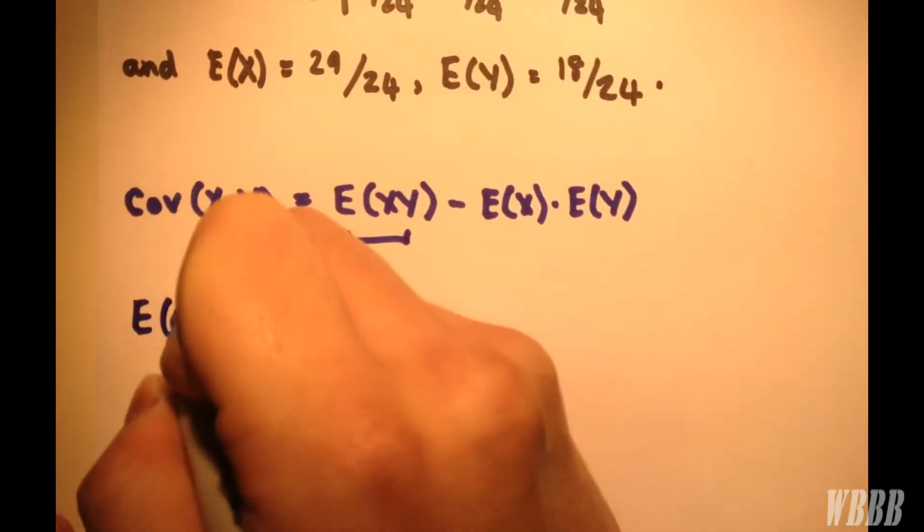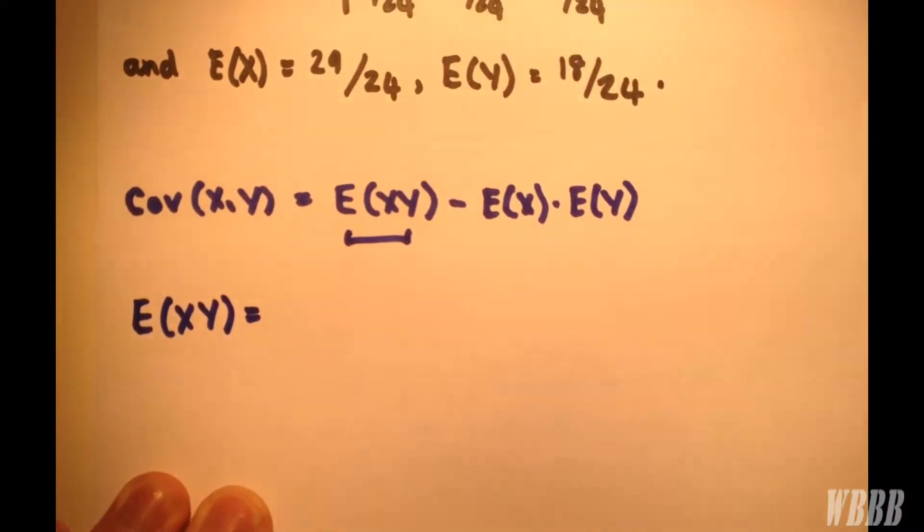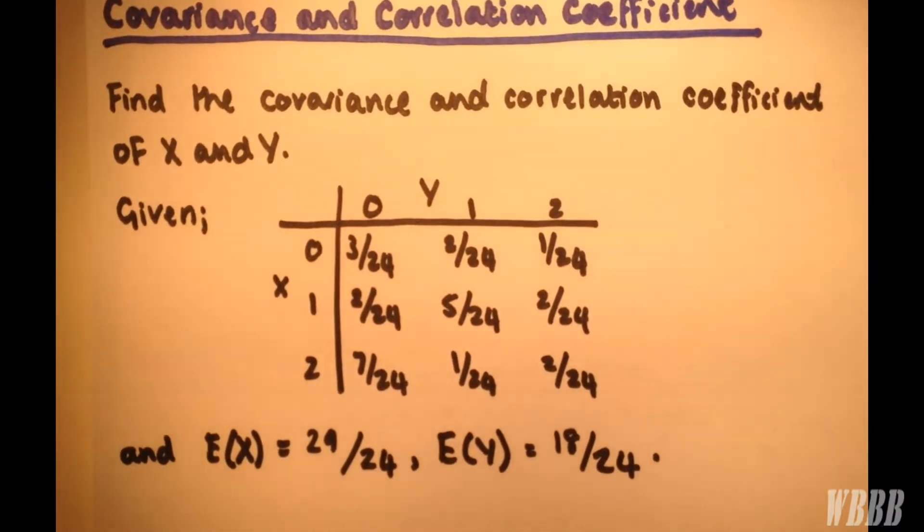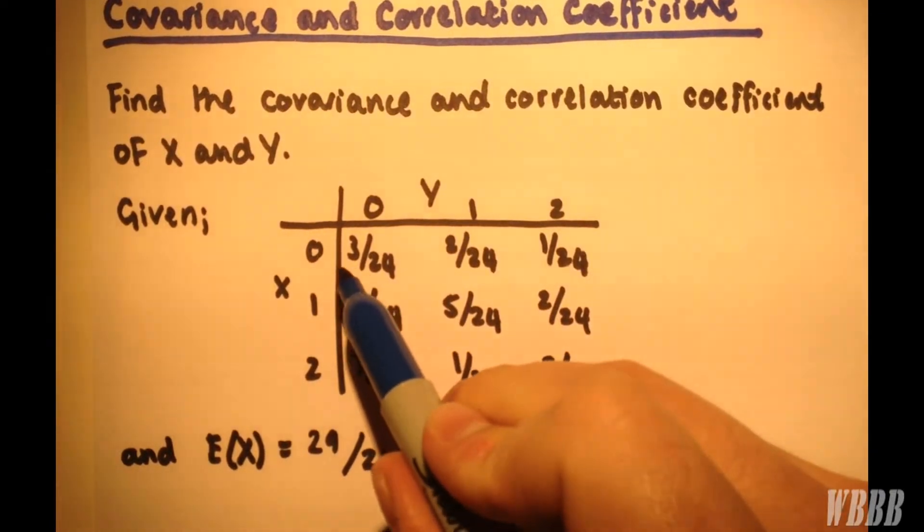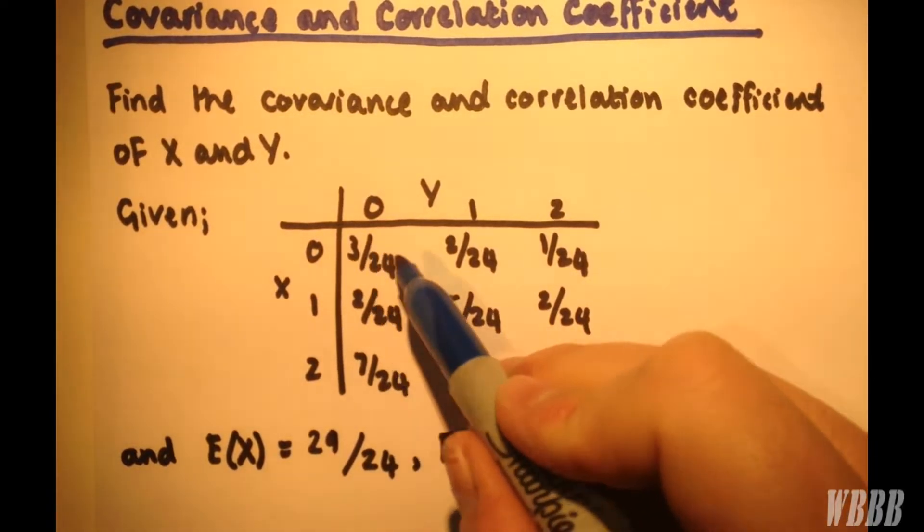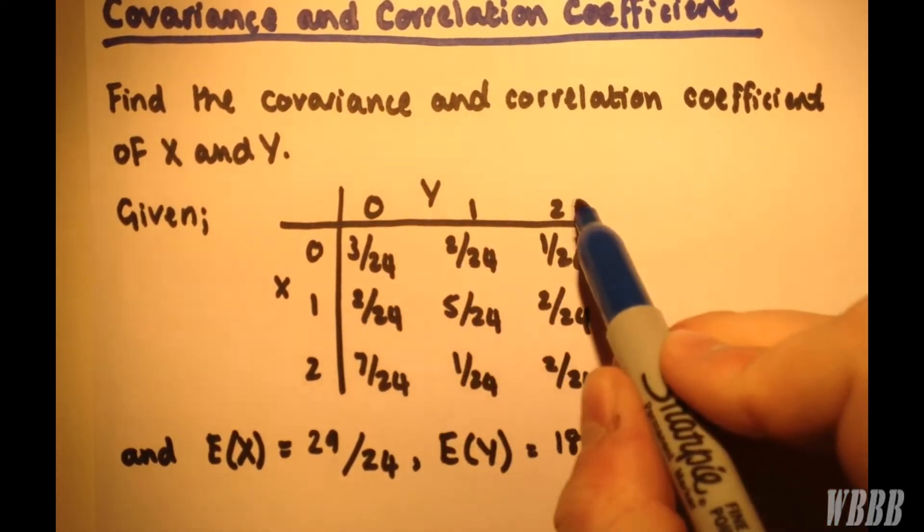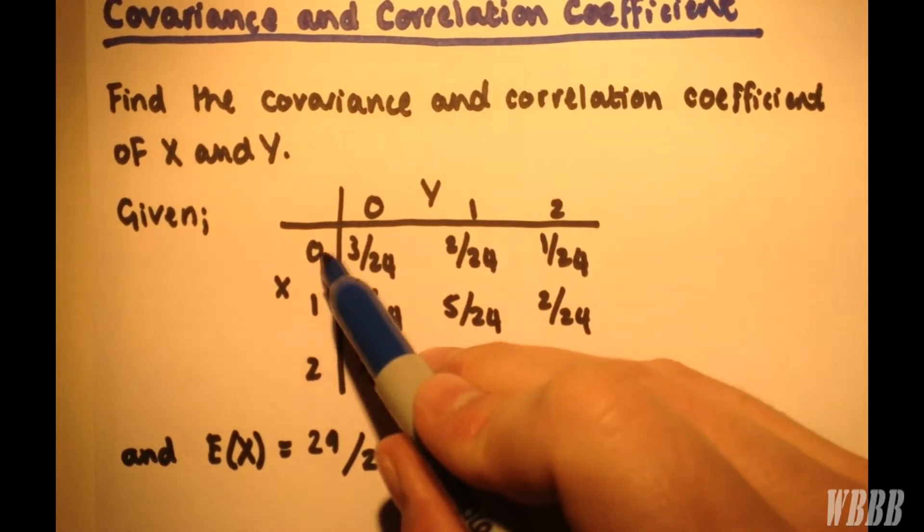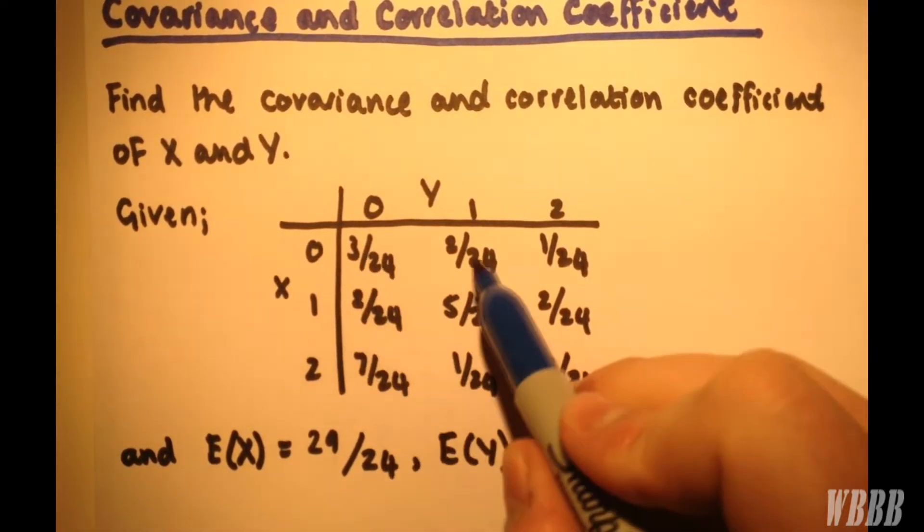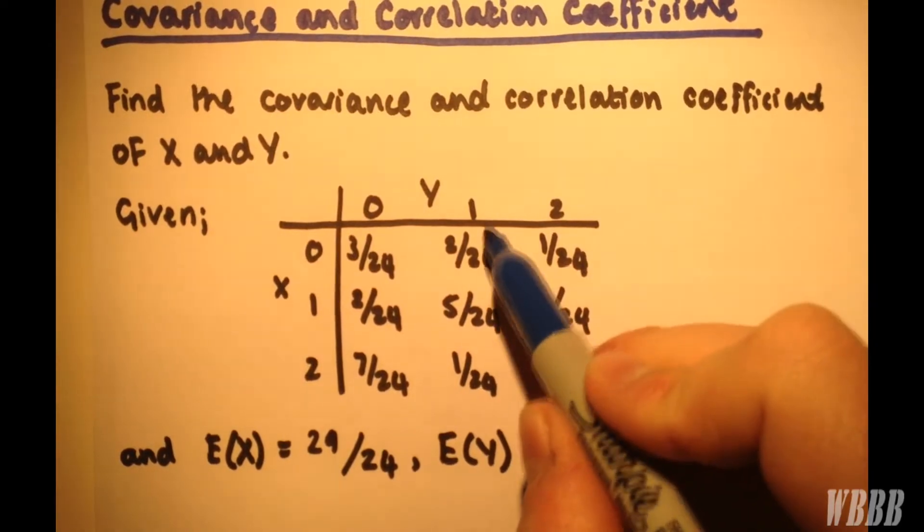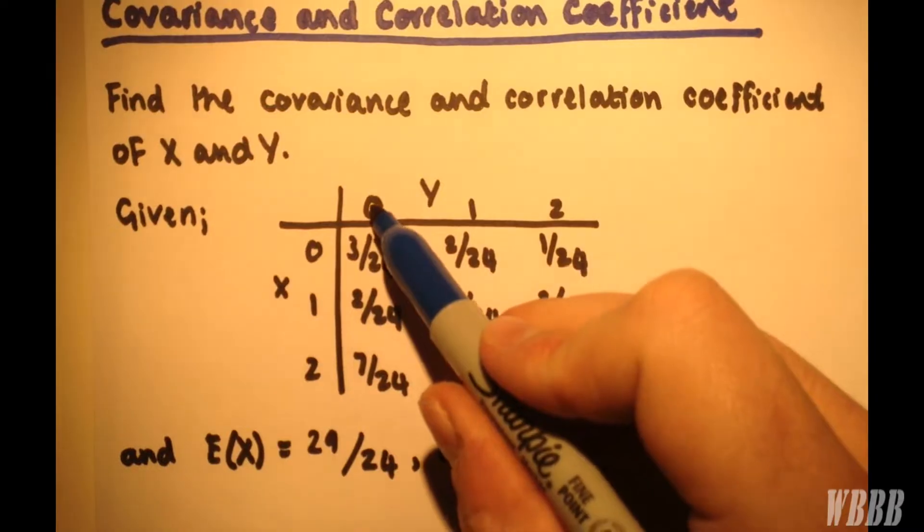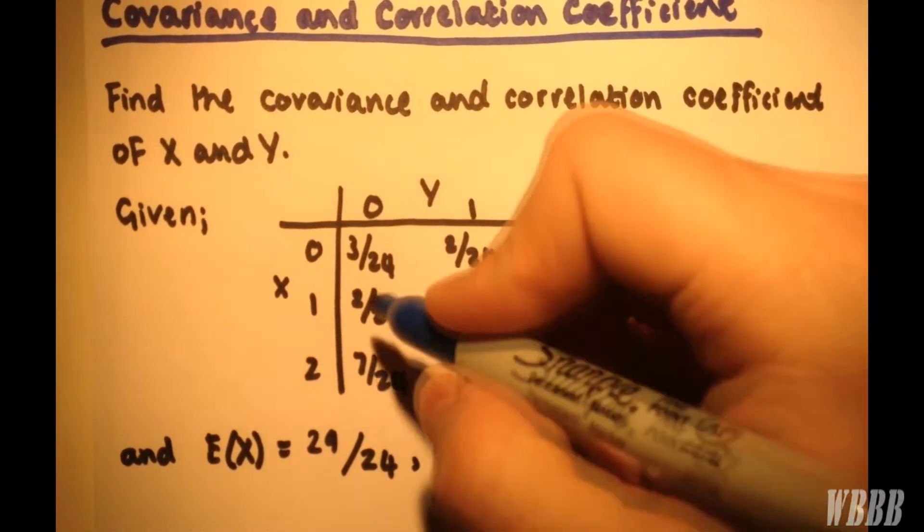So how do we work out the expected value of XY? Well, E(XY) is simply a case of multiplying each value in the table by the corresponding X and Y values. So we'd have 0 times 3/24 times by 0, which would give 0. 0 times 2/24 times by 1, 0 and so on. And notice that we'd have a 0 involved here and a 0 involved here.